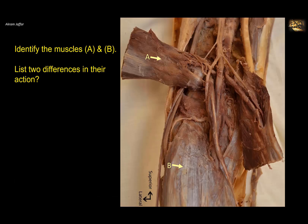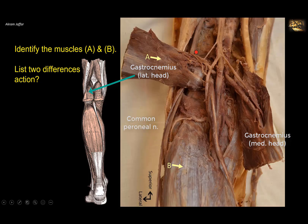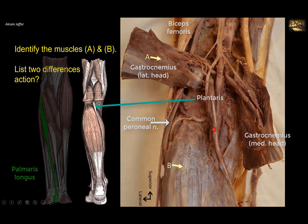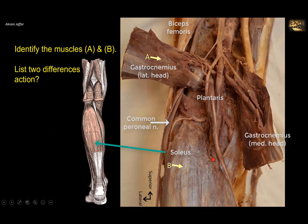Identify muscles A and B and note two differences in their action. This is a dissection of the back of the knee — the popliteal fossa. A is the lateral head of gastrocnemius, identifiable because the common peroneal nerve is visible going laterally with the tendon of biceps femoris, while the tibial nerve is on the other side. Also arising with the lateral head of gastrocnemius is the plantaris muscle, which has a very short belly and a long tendon, comparable to palmaris longus in the upper limb. B is the soleus muscle, arising from the soleal line of the tibia, crossing between the tibia and fibula with the posterior tibial artery and tibial nerve passing deep to it.